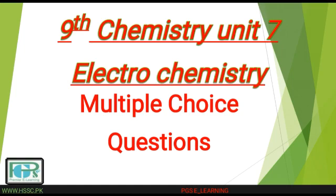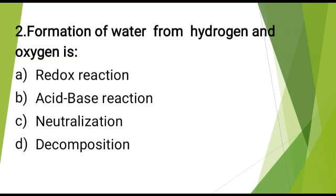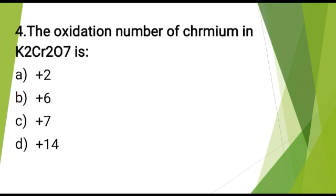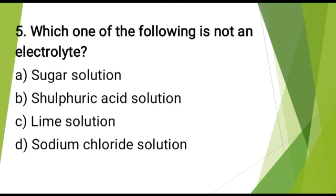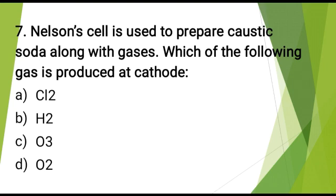Unit 7 Multiple choice questions. Spontaneous chemical reactions take place in? The correct answer is: galvanic cell. Formation of water from hydrogen and oxygen is? The correct answer is: redox reaction. Which one of the following is not an electrolytic cell? The correct answer is: sulfuric acid solution. The most common example of corrosion is? The correct answer is: rusting of iron. Nelson cell is used to prepare caustic soda. Which one of the following gas is produced at cathode? The correct answer is: H₂.